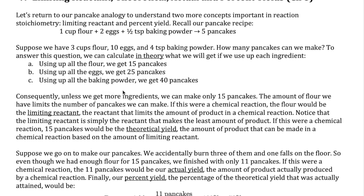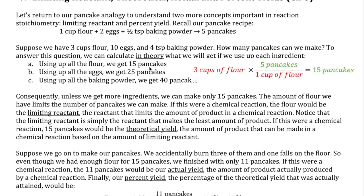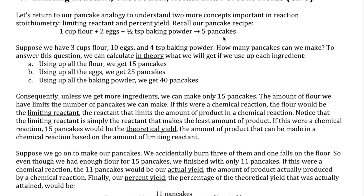So how do we figure out how many pancakes we can make? We can calculate how many pancakes we'd get in theory if we used up each ingredient. If we use all the flour, we get 15 pancakes because each cup of flour gives us five pancakes. With 10 eggs we can make 25 pancakes in theory because every two eggs gives us five pancakes. And if we use up all four teaspoons of baking powder, we get 40 pancakes, since each half teaspoon gives us five pancakes.